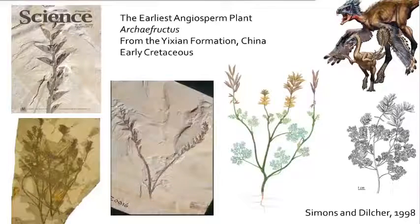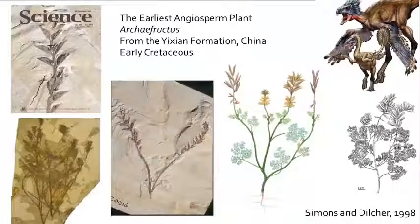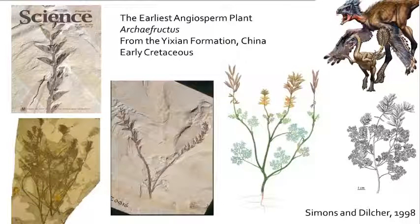The oldest angiosperm and the oldest flower is found in the early Cretaceous Yixian Formation in China, which is the same layer of rocks that produces many of the feathered dinosaurs. This is Archaefructus, which is the oldest flowering plant known.